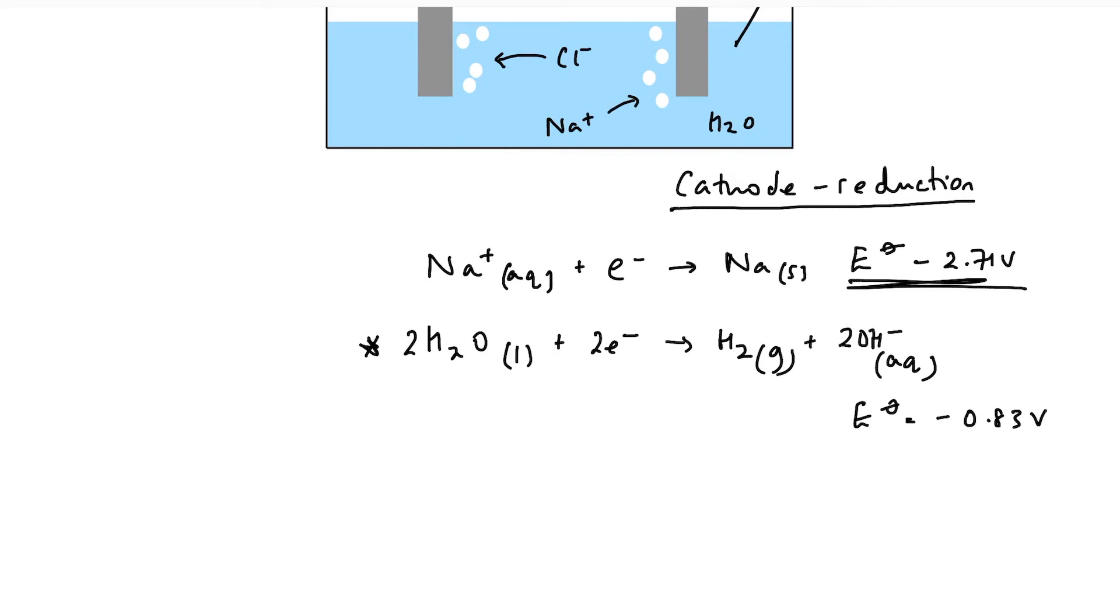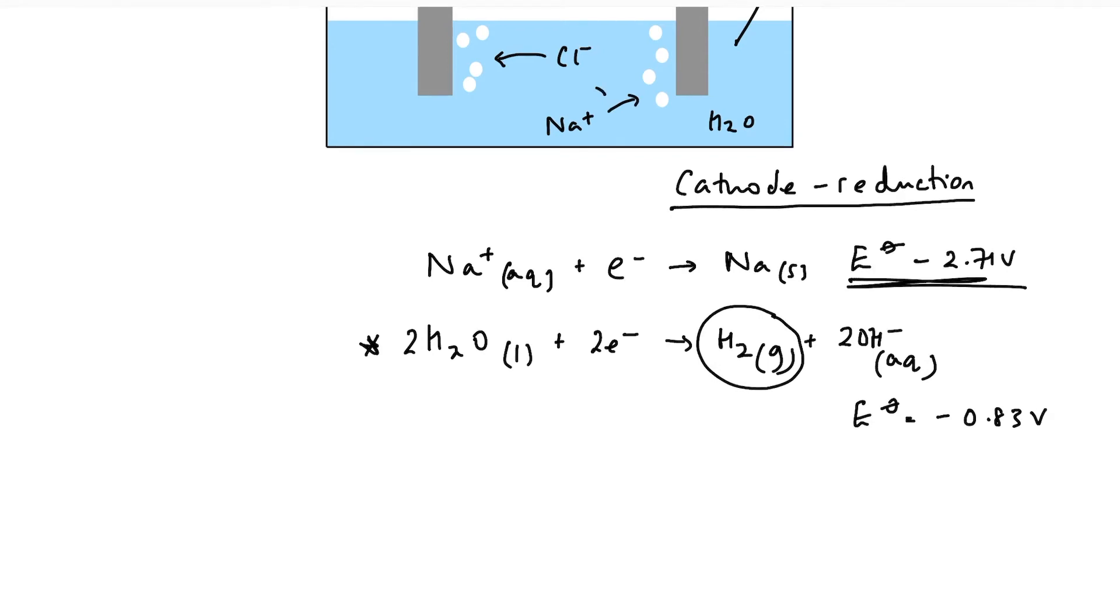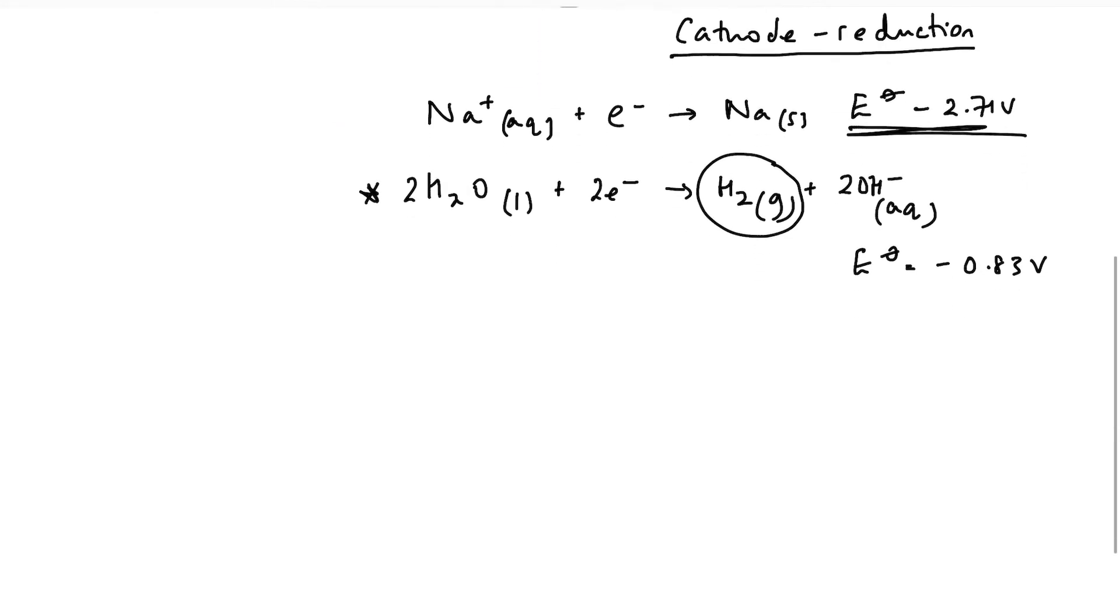So this is the reaction that's going to happen and hydrogen gas is going to be produced. The sodium ions remain in solution. So the overall equation for the electrolysis of brine. We've got two water molecules reacting with chloride ions to form chlorine and hydrogen and hydroxide ions.